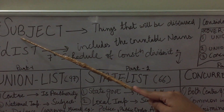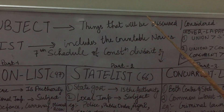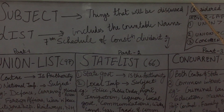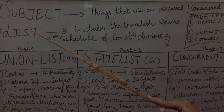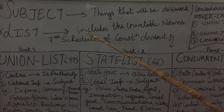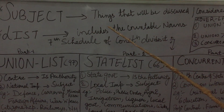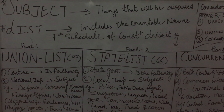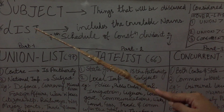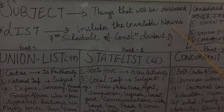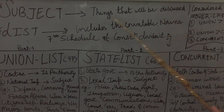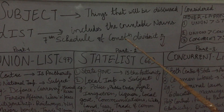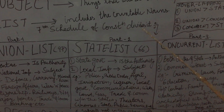When I talk about subject — subject kya hota hai — things that will be discussed or considered. Aur jab main list bolungi, list kya hota hai: jaise hamare day-to-day life mein, if I say prepare a list of what you want to buy, toh uske andar saare samaan ki cheezein likhte ho jo required hain. Therefore this is the same — list includes the countable nouns. In this 7th schedule of our constitution, this list is divided into 3 parts.